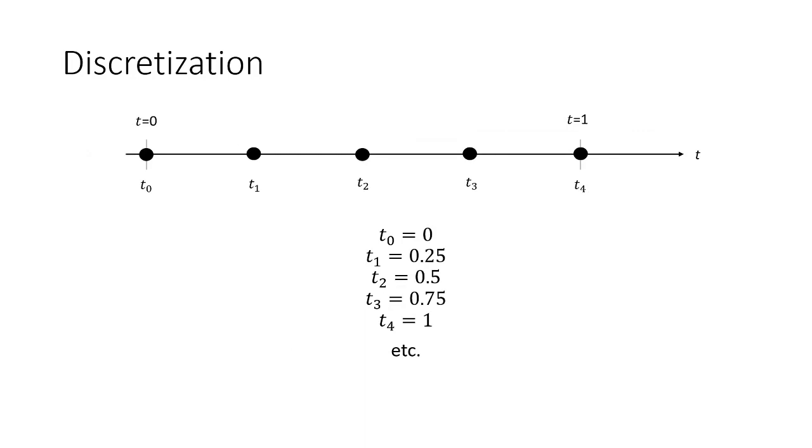For example, here, illustrating what a time discretization would look like with Δt of 0.25 seconds. Basically, we have t₀ starting at t zero. And then t₁ at 0.25 seconds, t₂ at 0.5 seconds, t₃ at 0.75 seconds, and t₄ at 1 second, and so on and so forth until we reach our final time.